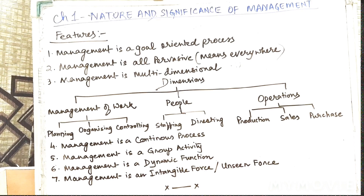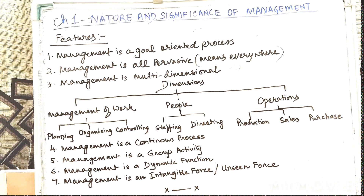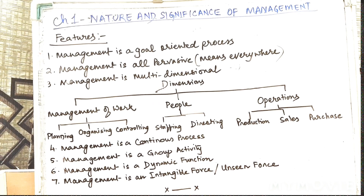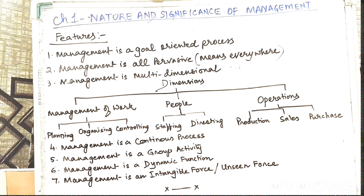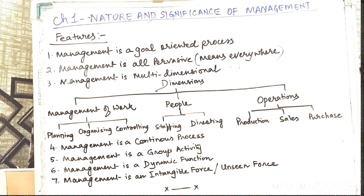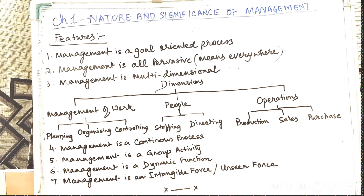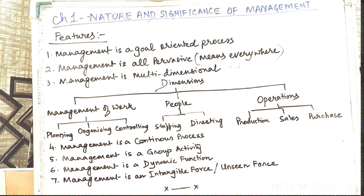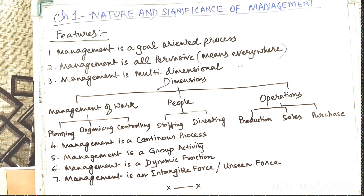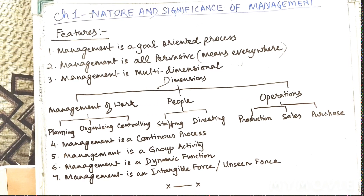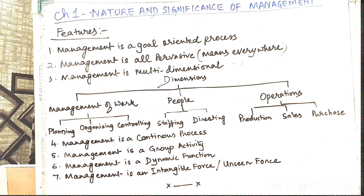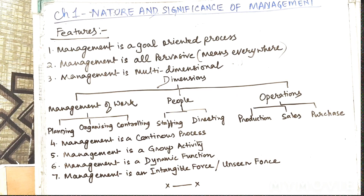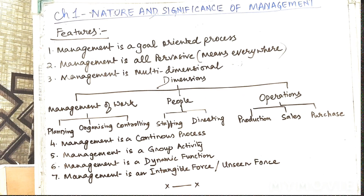The fourth feature: management is a continuous process, meaning it keeps on happening. It is a series of activities or functions — for example, planning, organizing, staffing, directing, and controlling. It is performed by all the managers and at all times.